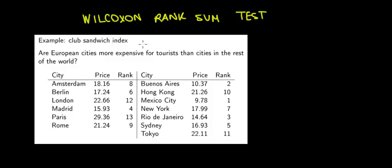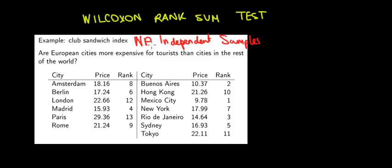Let's work on the concept of the Wilcoxon rank sum test. This is a non-parametric test, but the difference between the Wilcoxon rank sum test and the Wilcoxon signed rank test is that we now have two independent samples, whereas before we had matched pairs. Independent samples means the data we're comparing does not have anything in common between the two observations. When we have matched pairs, the dependent factor is that they're the same observations in two different settings.